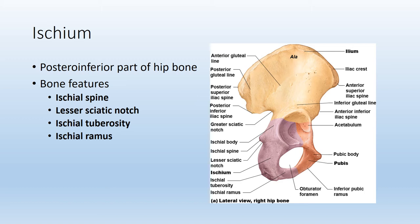The ischium is the posterior inferior part of the hip bone — think of the gluteal region. Key features: the ischial spine is a narrow projection you encounter by following the greater sciatic notch inferiorly. Just inferior to that is the lesser sciatic notch. The ischial tuberosity is a roughened patch of bone on the posterior aspect and is an important attachment point for the hamstrings. The ischial ramus is an arm- or bar-like projection of bone forming the remaining portion of the ischium.